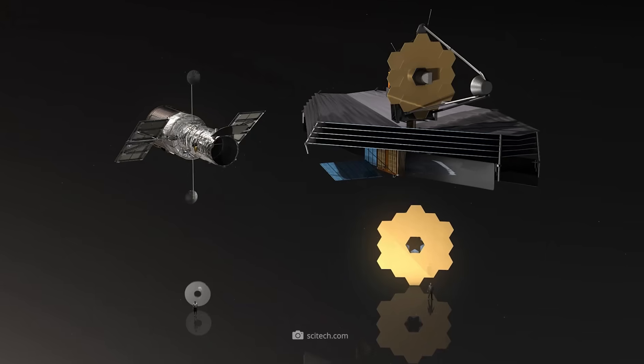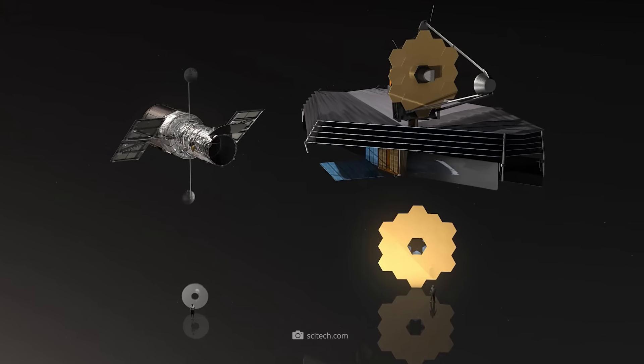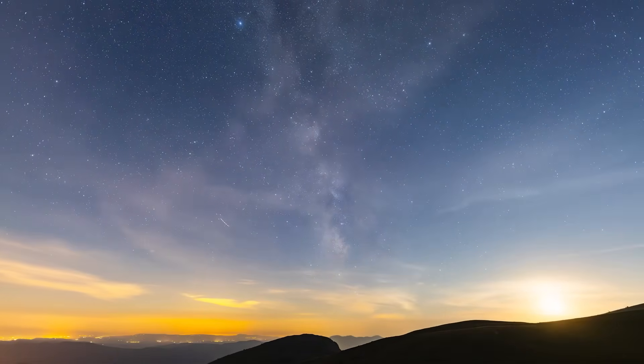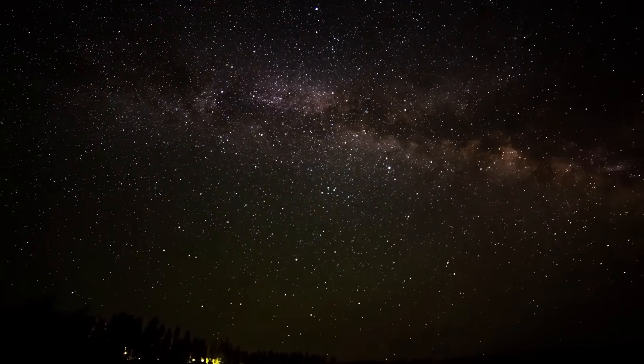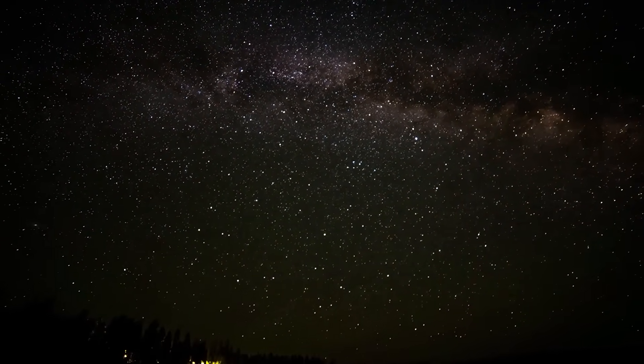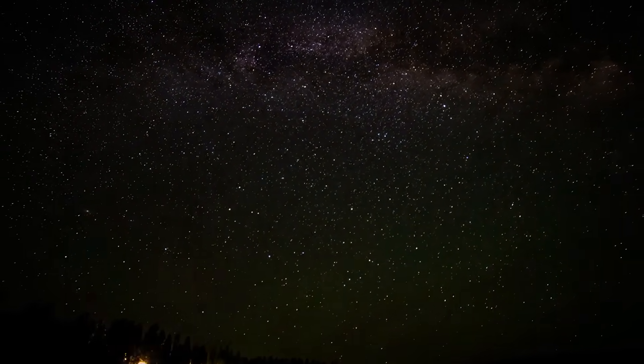Hubble and the JWST both use gyroscopes and precise control systems to remain pointed at the same spot for days at a time. The raw images are combined with special algorithms to remove interference and make the faintest light signals visible.